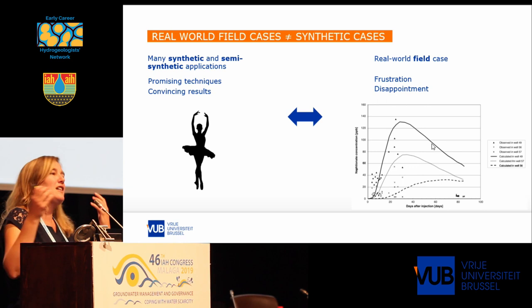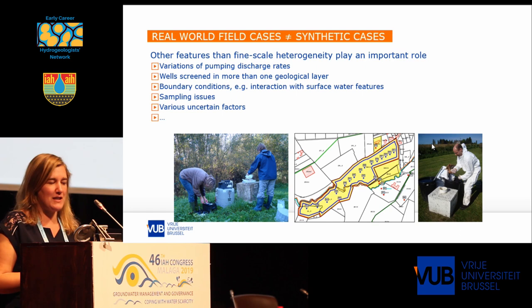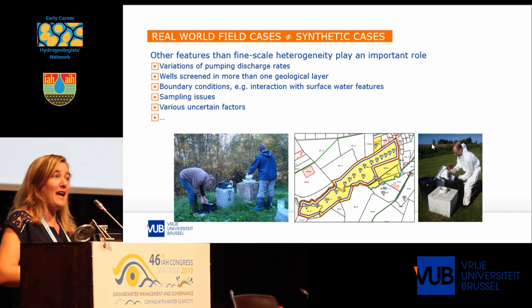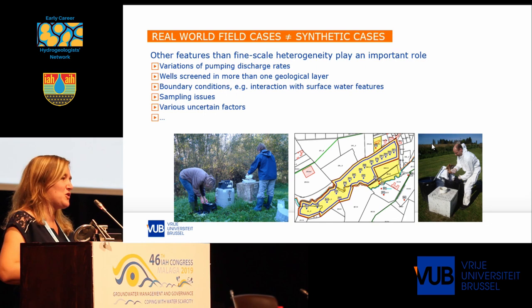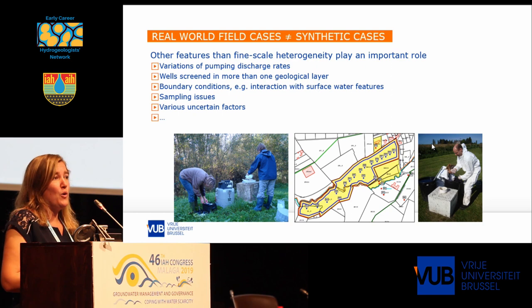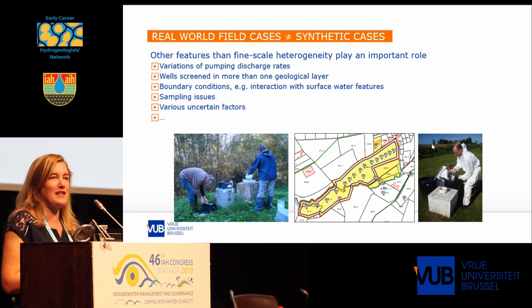I could get results like the graph you see there where the model completely didn't fit the data. In the real world, many other features than small-scale heterogeneity play an important role, and heterogeneity is often much more complex than the assumptions made in synthetic examples. In our case, for example, in the tracer test we did, there were some variations in pumping discharges we didn't know about, the wells were screened in more than one layer with some uncertainty about that, and we had quite a lot of uncertainty on the boundary conditions, which proved to be much more important than heterogeneity. We also had some sampling issues, and so on.